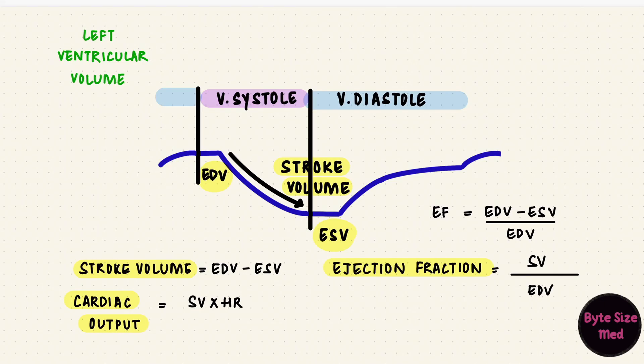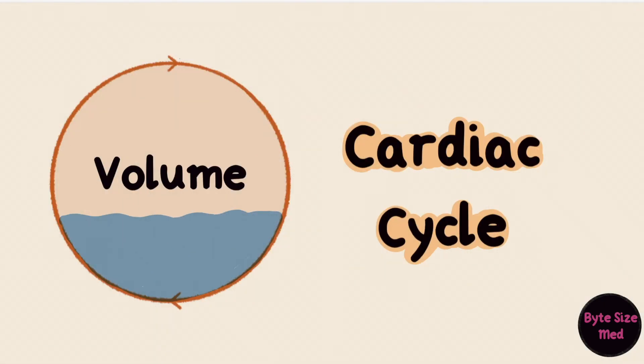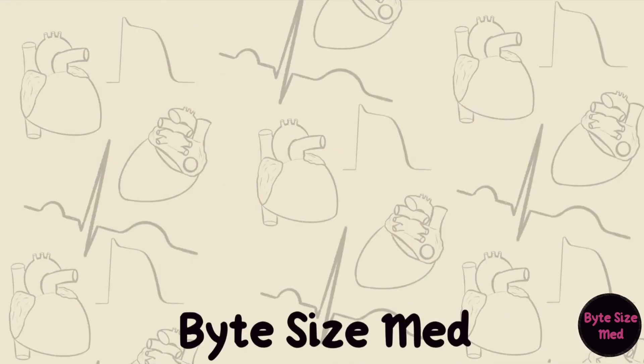And those are all the volume changes that happen during the cardiac cycle. In part 3, we'll look at some of the pressure changes. I hope this video was helpful — if it was, give it a like and subscribe to my channel. Thanks for watching and I'll see you in the next one.